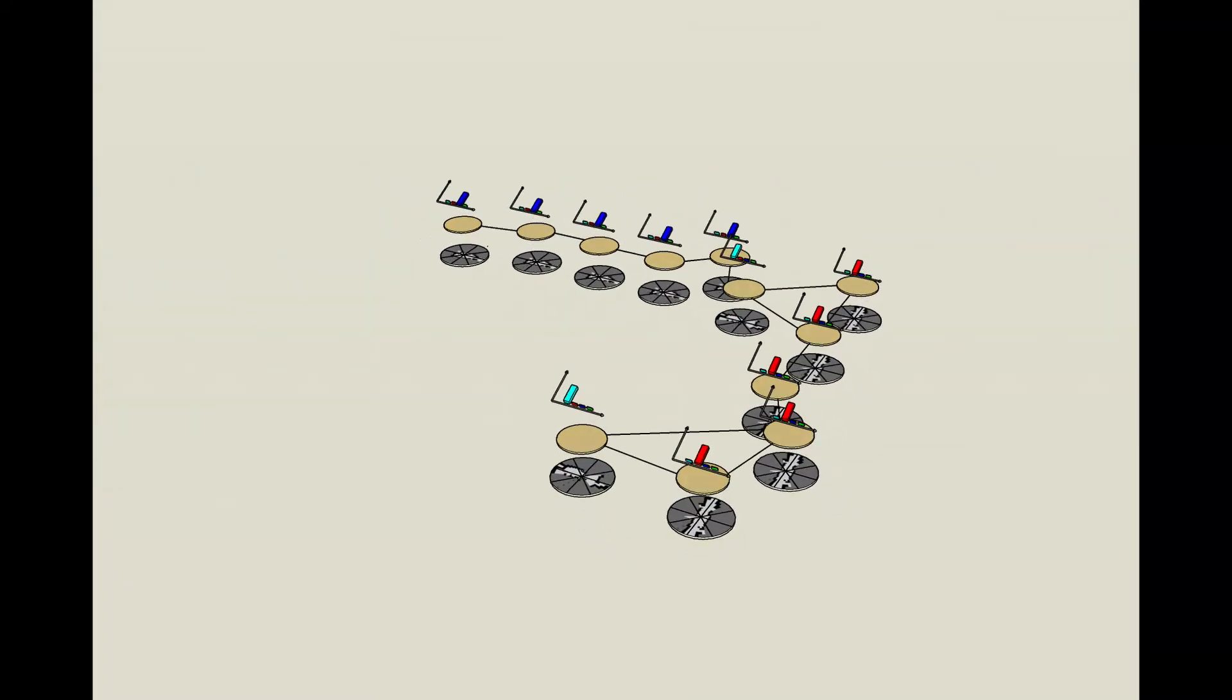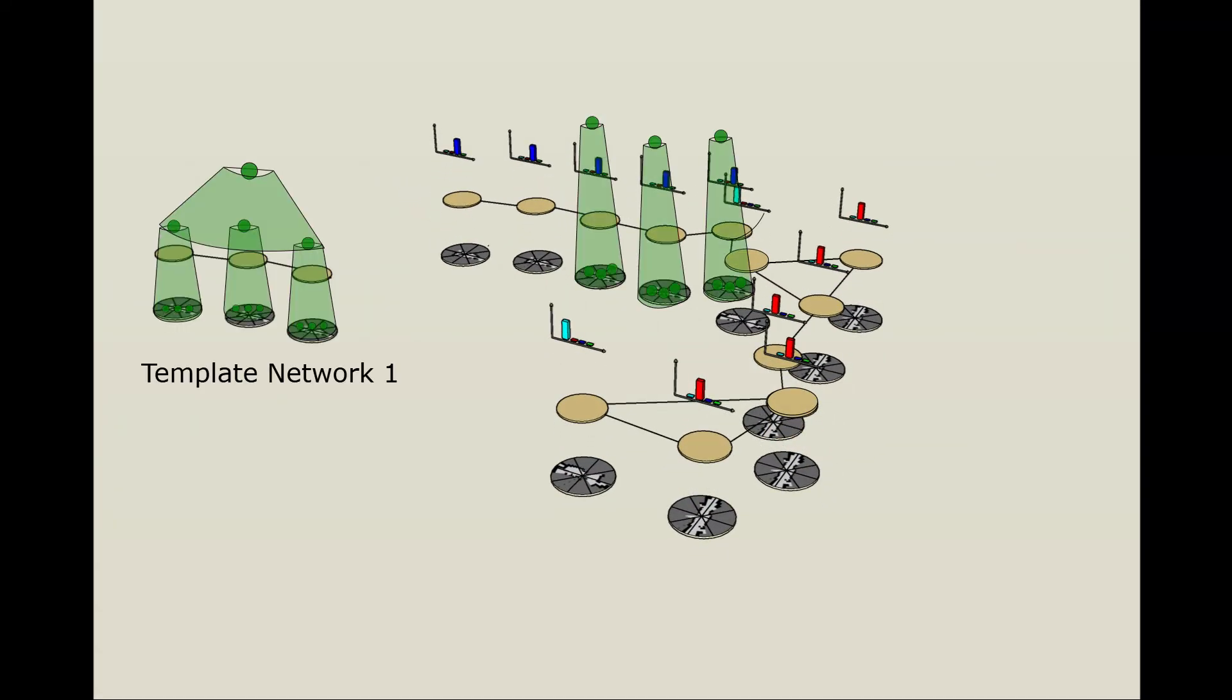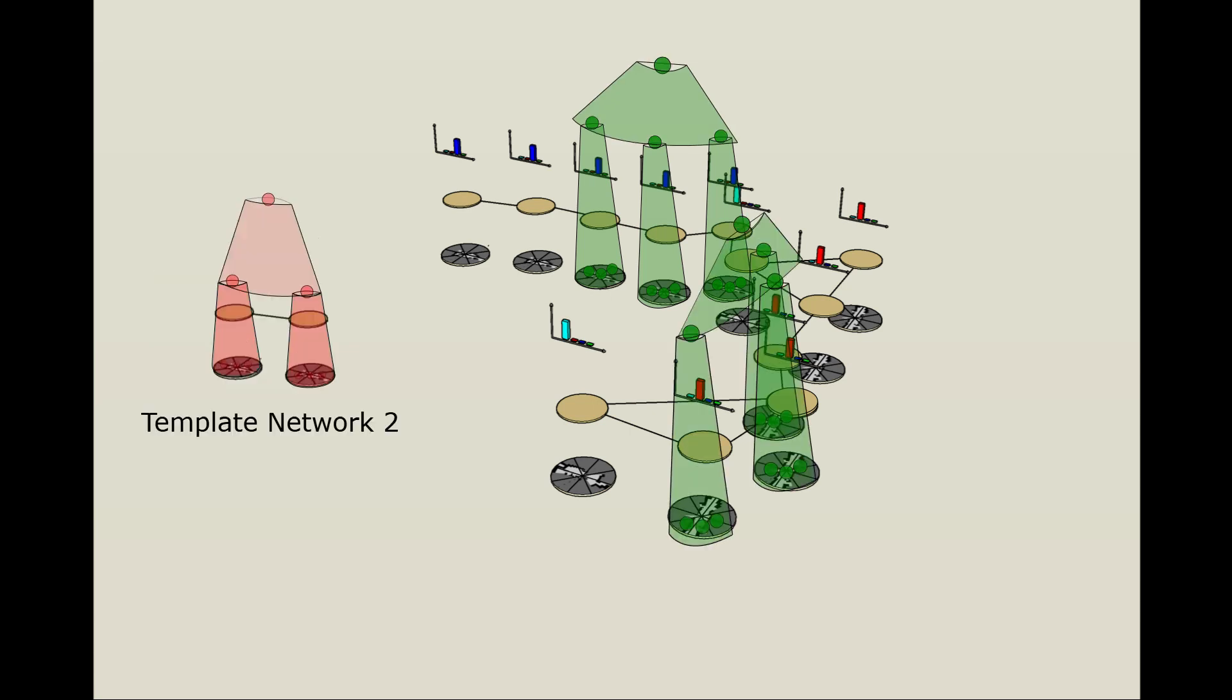Our unified network is a deep template model assembled from template networks learned to represent specific recurring structures in the environments. Each such structure corresponds to a subgraph of the topological graph.